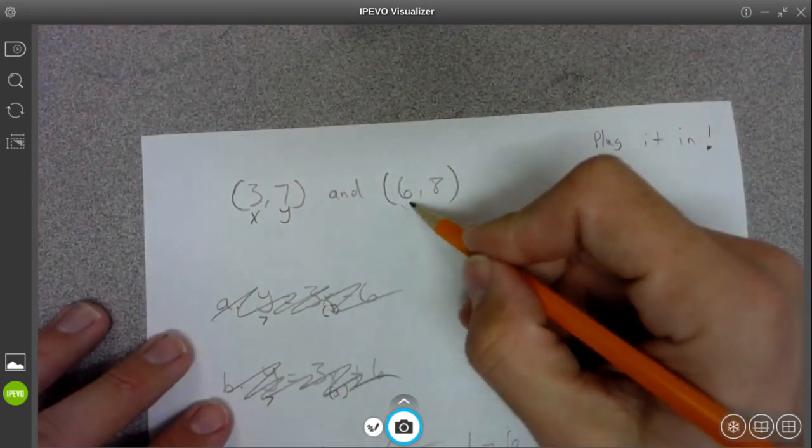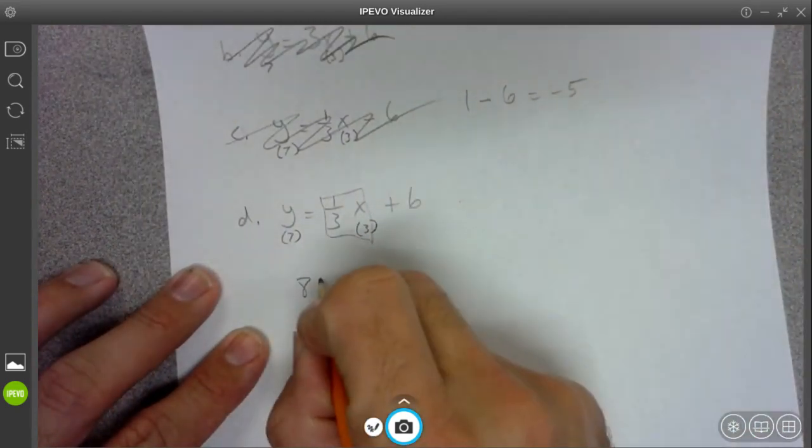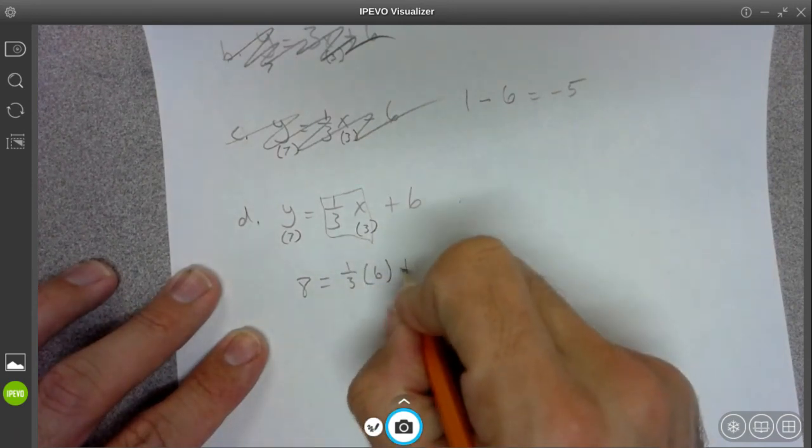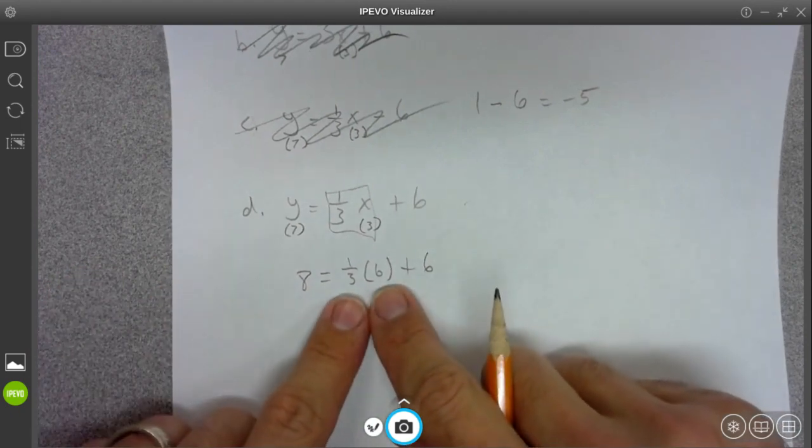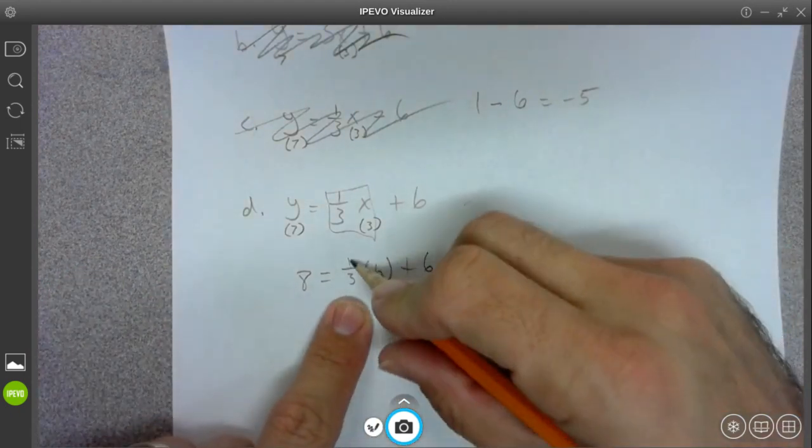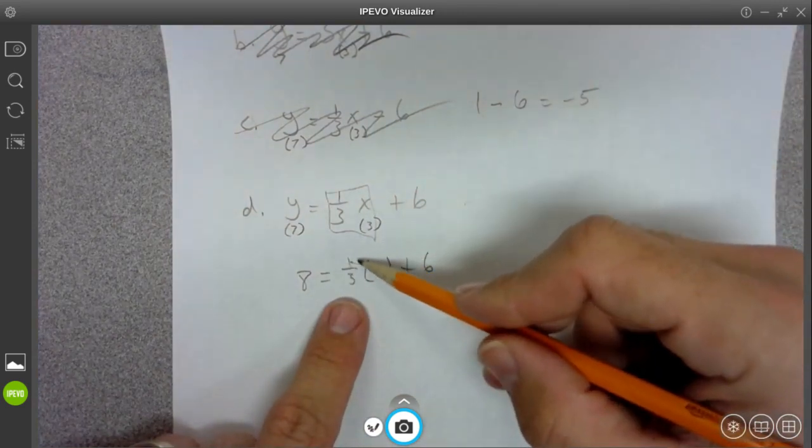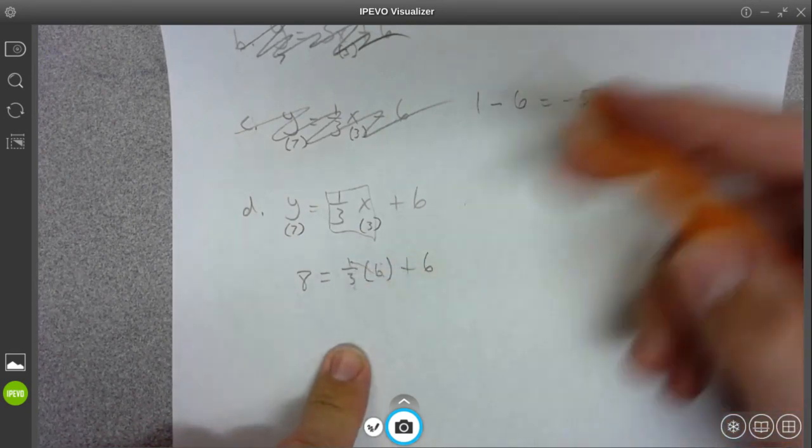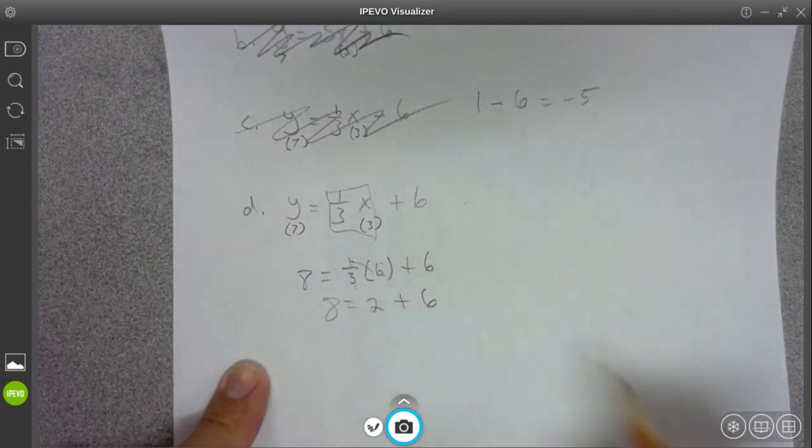And then go ahead and plug in six for X and eight for Y. We'll just finish up here. Alright. Eight for Y equals one third times six plus six. Alright. So one third of six, we can do, you know, six times one, multiply those. So that's six. And then we're going to divide that by three. So six divided by three is equal to two. And there you go. Do get eight. So that works out.